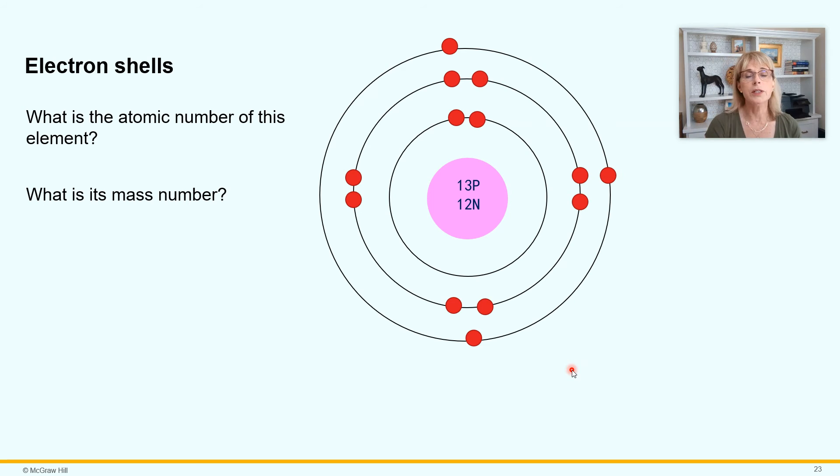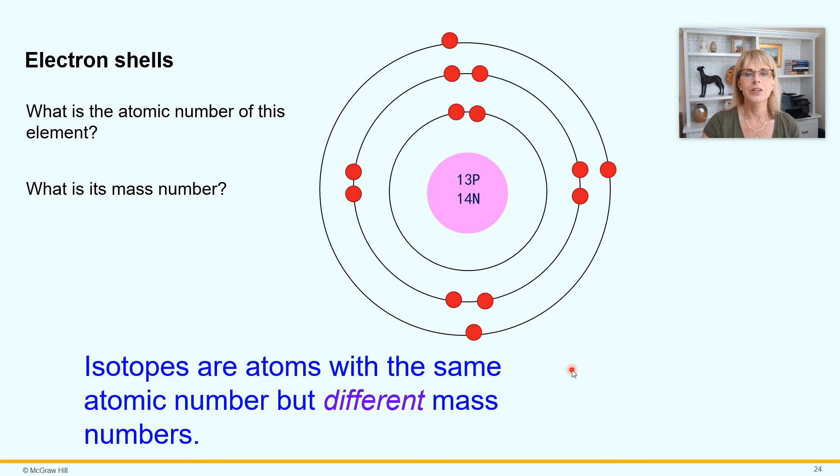Now, what is the atomic number of this element? Well, it says right there it's got 13 protons, so the atomic number is 13. What's its mass number? For the mass number, we take the number of protons and add the number of neutrons, so the mass number for this element is 27, simple.